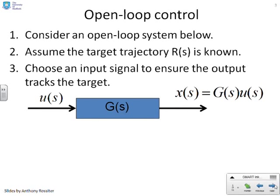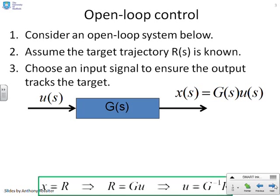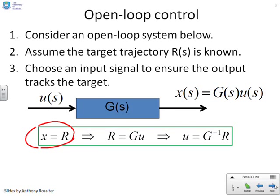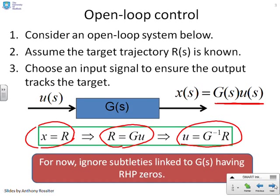Let's look at open-loop control first. Here's an open-loop system with a signal u(s) going into a block G(s) and an output x = G times u. Assume the target R(s) is known. Can you choose an appropriate input signal to ensure the output tracks the target? This is relatively easy. If we want x to equal r and we know that x equals g times u, then r equals g times u. I can therefore solve that to get u equals G inverse times r. So if I choose u this way, then in theory I've got exactly the output that I want. We're ignoring any subtleties linked to G(s) having right half-plane zeros.